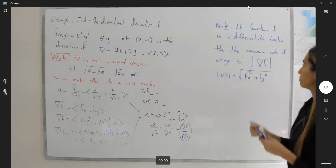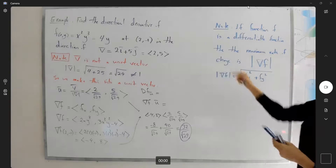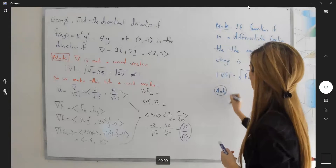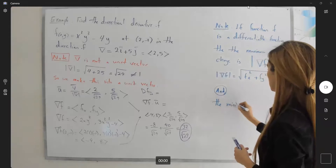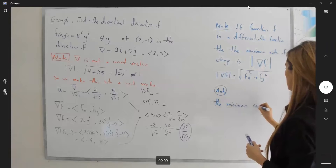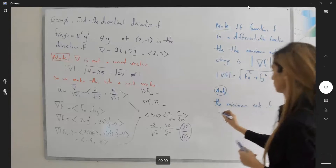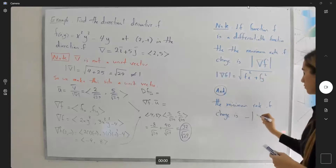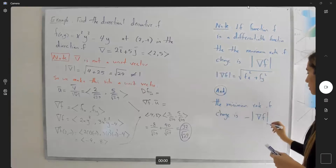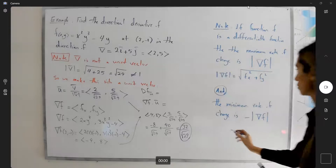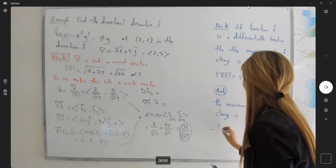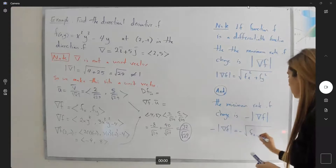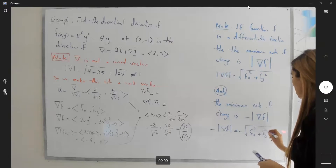And the minimum rate of change is negative the magnitude of your gradient function, which is going to be negative times the square root of f of x squared plus f of y squared.